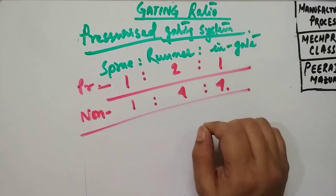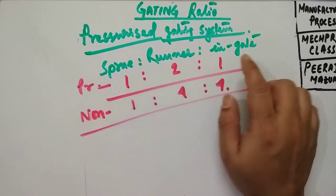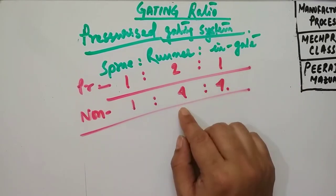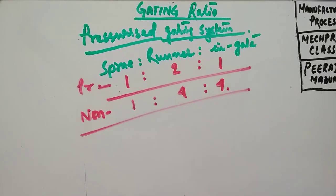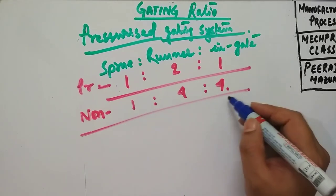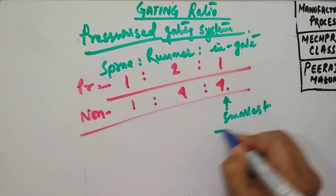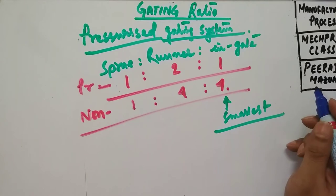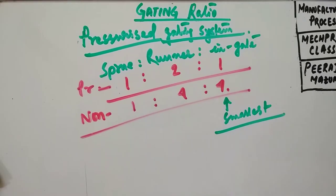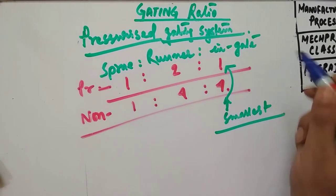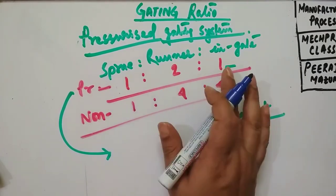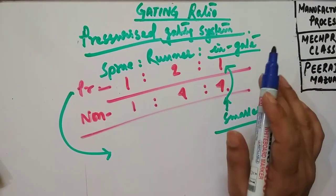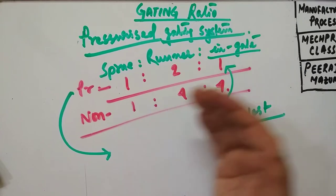For the pressurized one, it is 1 is to 2 is to 1. From these two ratios, you can easily determine that in the non-pressurized case the sprue and ingate areas are less than the runner, but in the pressurized case the ingate area is the smallest, thus maintaining a back pressure throughout the gating system.